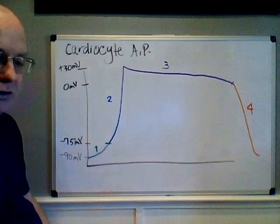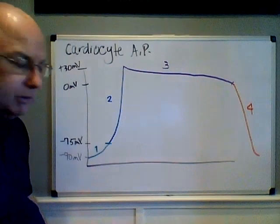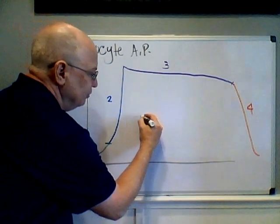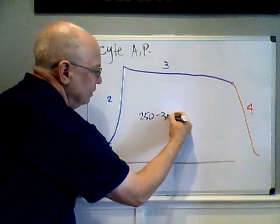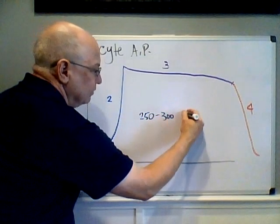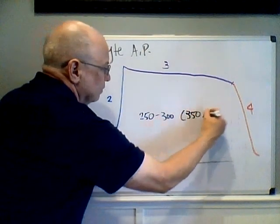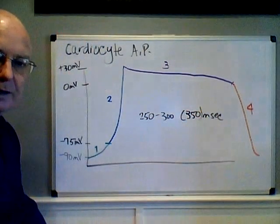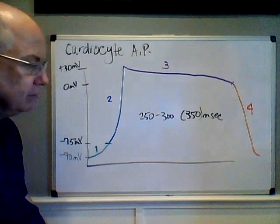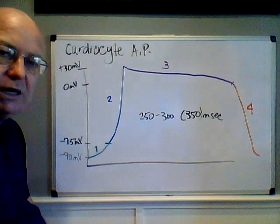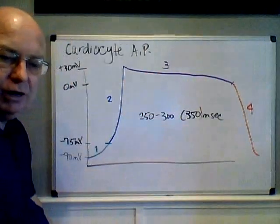The last thing you need to know is that unlike a neuron action potential, the cardiocyte action potential can last somewhere between 250 to 350 milliseconds — that's almost 150 to 200 times longer than the neuron action potential.